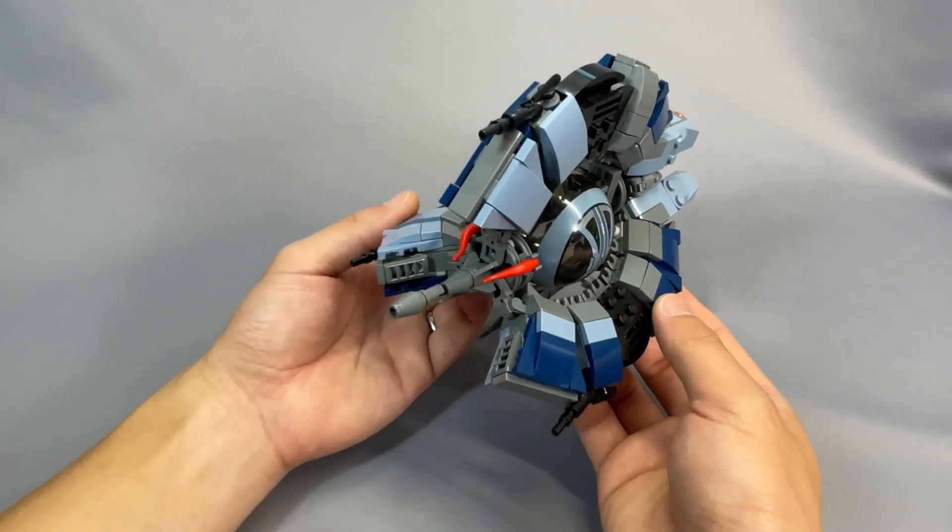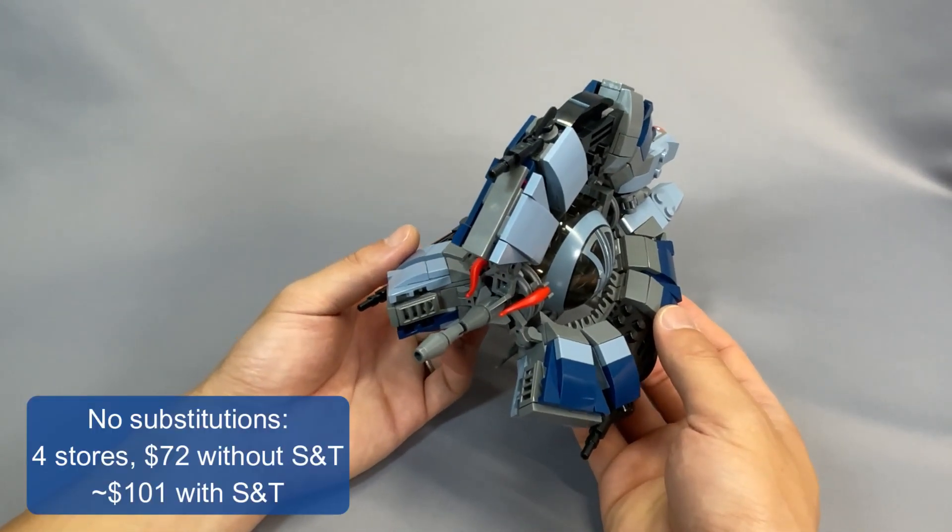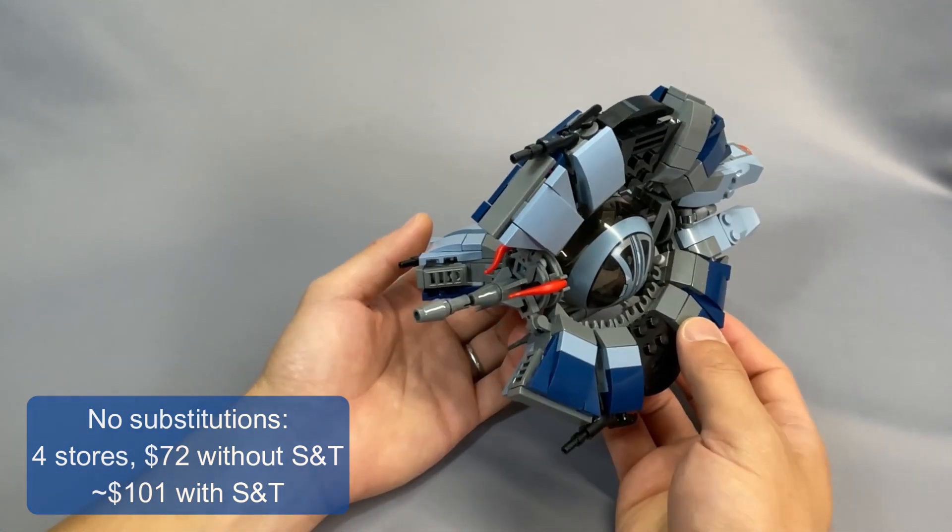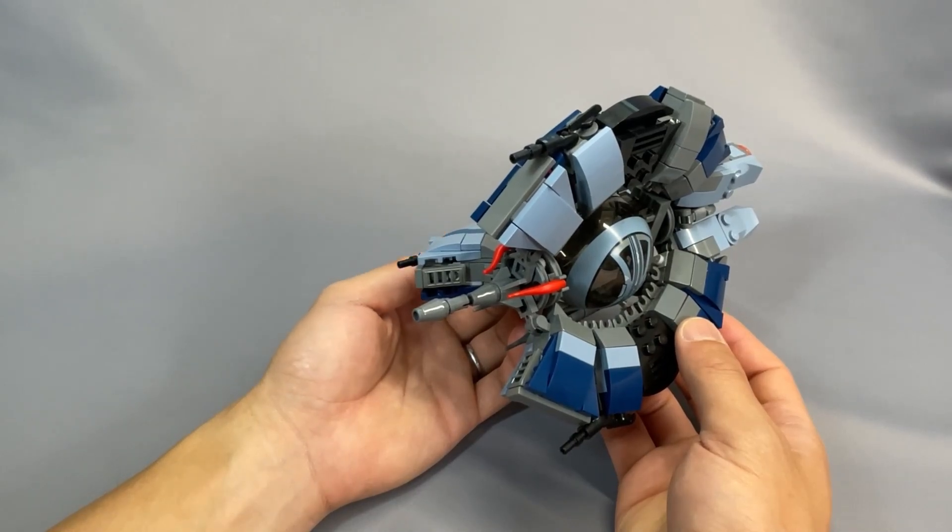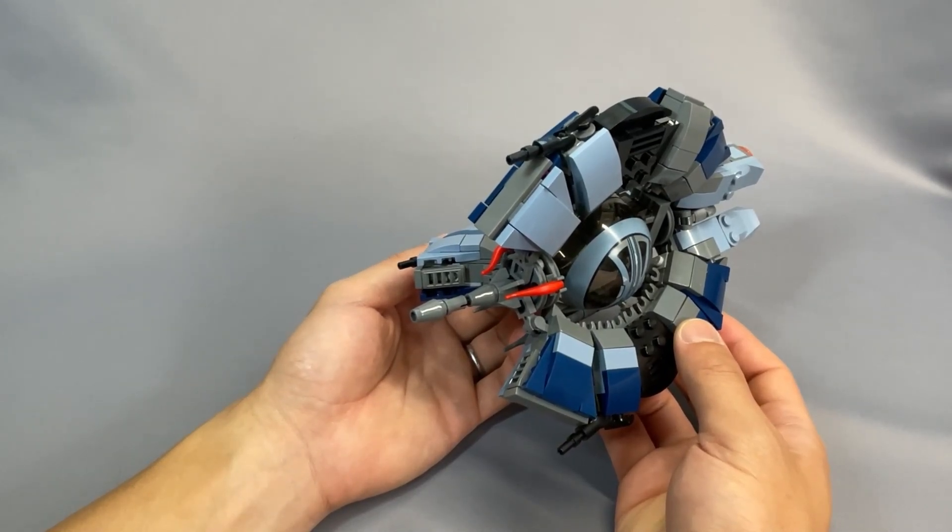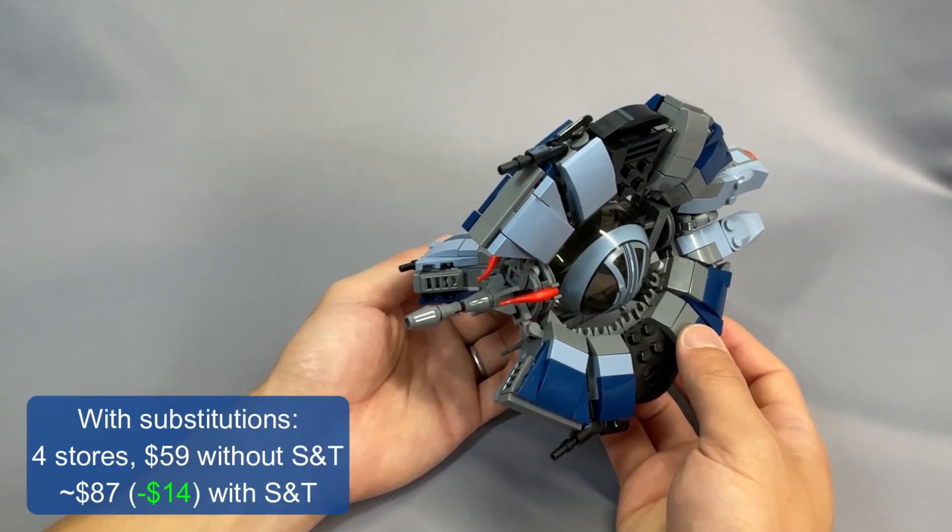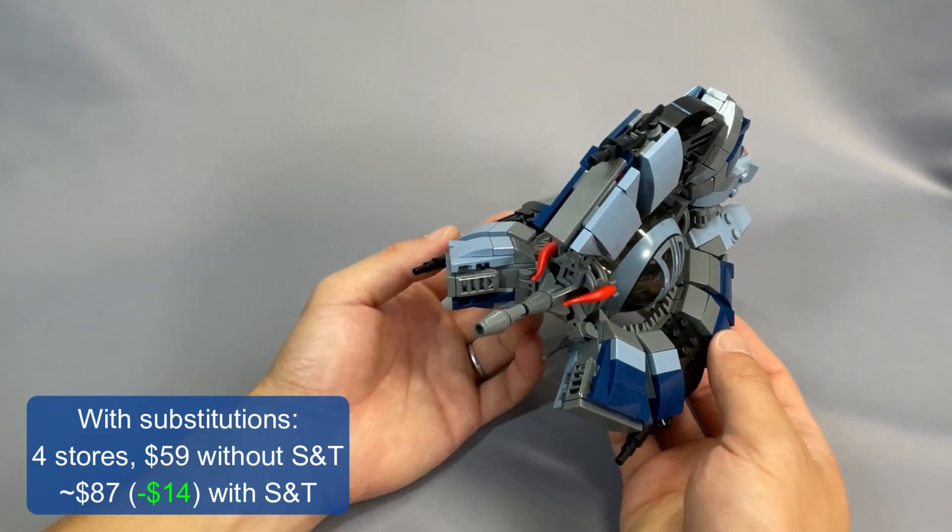As I said in the introduction, without any substitutions, I got four stores and $72 without shipping and tax, or about $101 with shipping and tax. With the screwdriver and the color substitutions for the flower and all of the white pieces, I got four stores and $59 without shipping and tax, or about $87 with shipping and tax.